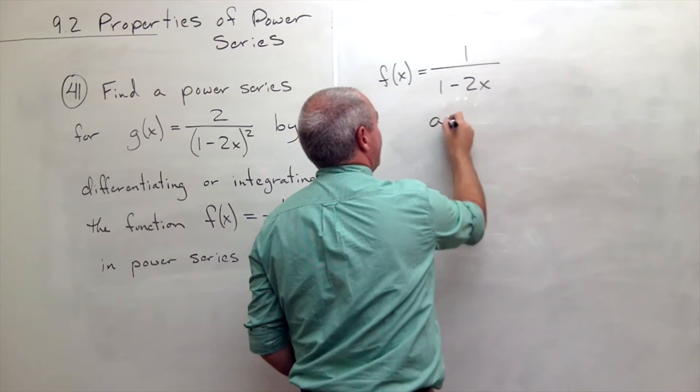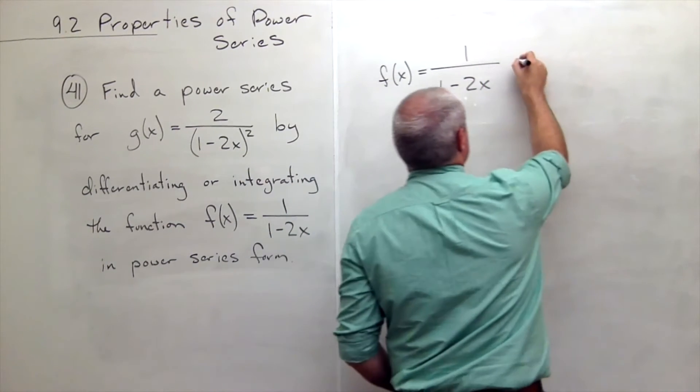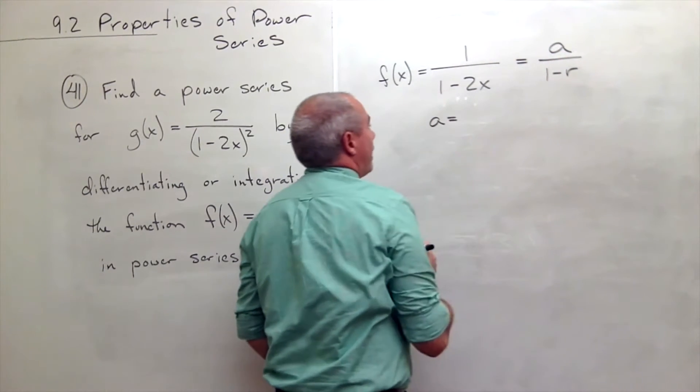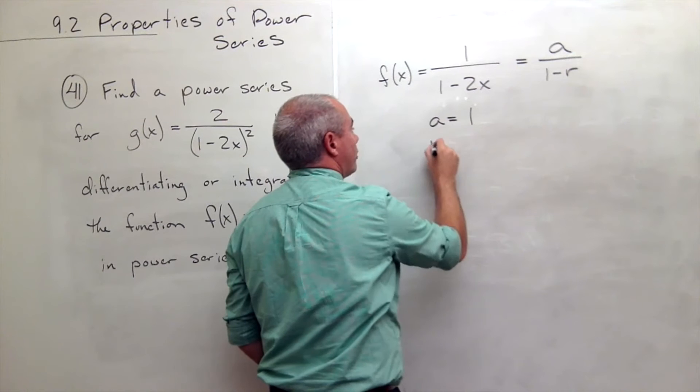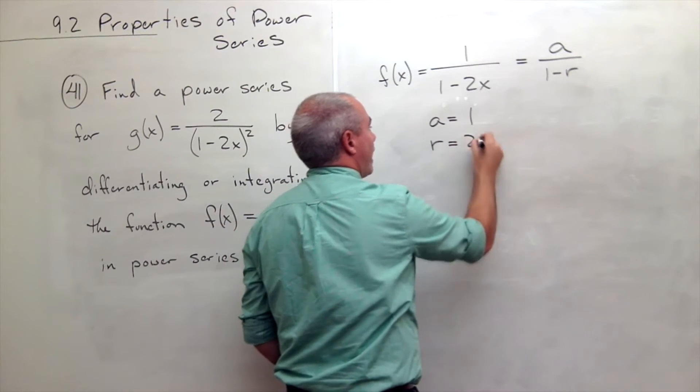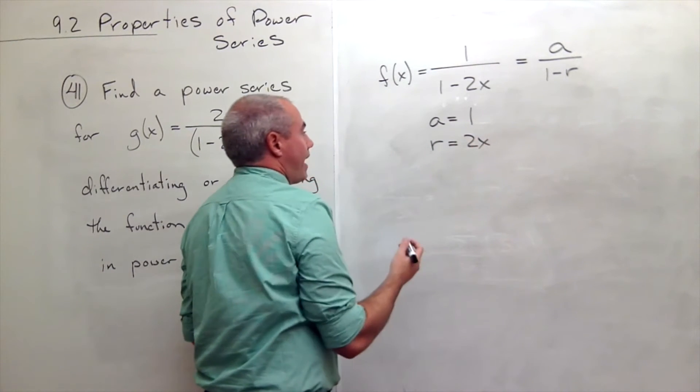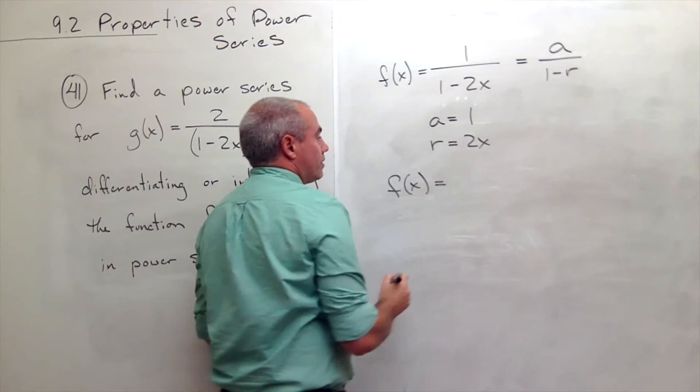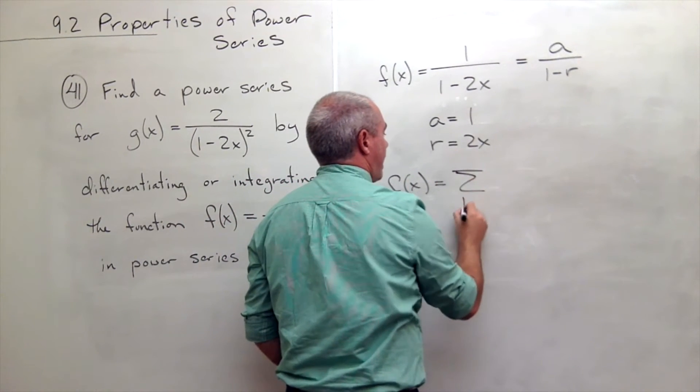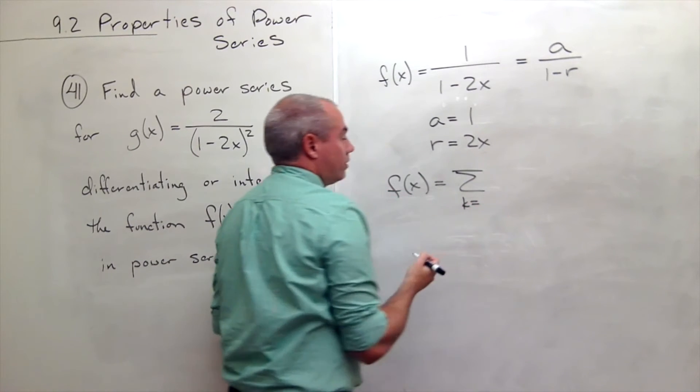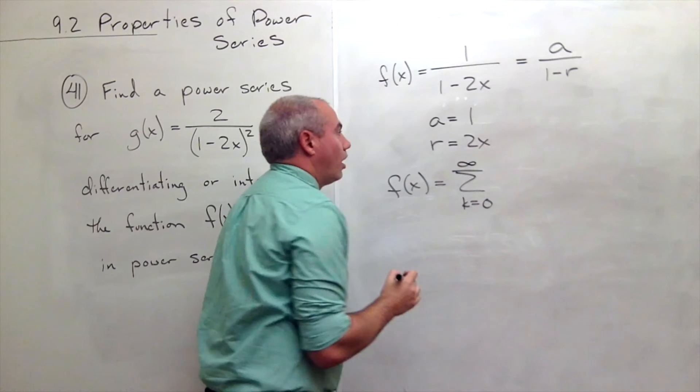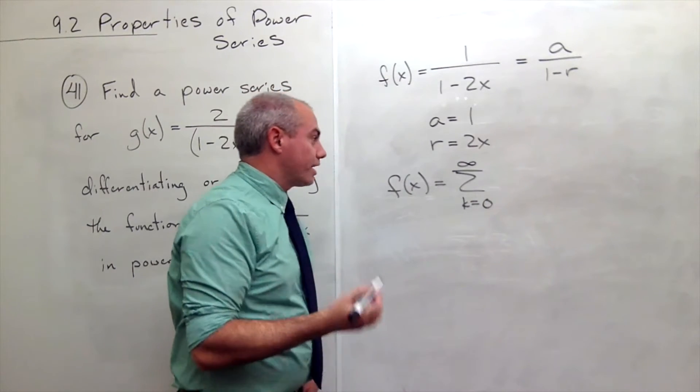In this case, a, if I think of this as an a over 1 minus r, a is 1 and r is 2x. So my power series for f(x) would be the sum, k going from 0 to infinity of a r to the k.